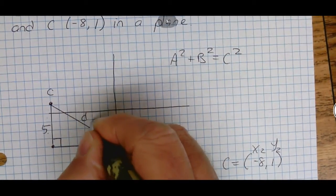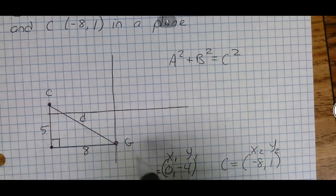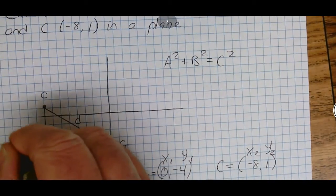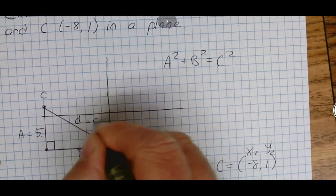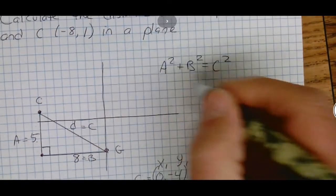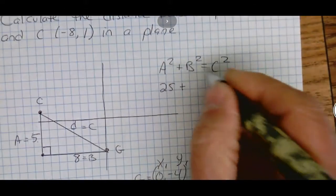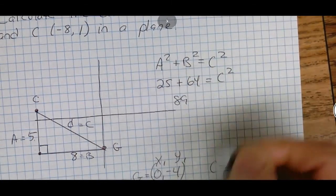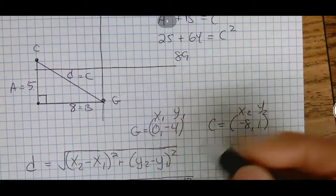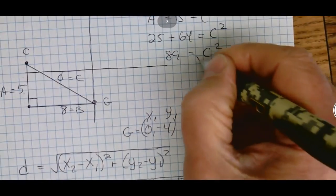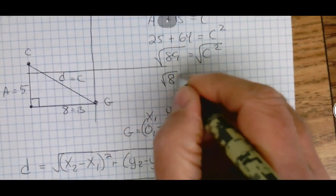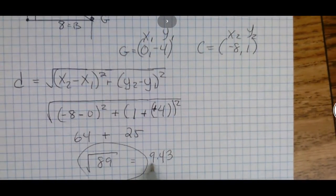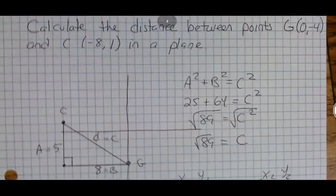For Pythagorean theorem we plug this into the equation. a² is 25 plus b² which is 64 equals c². That gives us 89 = c², just like we got before. We take the square root of each side, and again the exact answer would be √89 = c, or if you want the decimal we have 9.43.